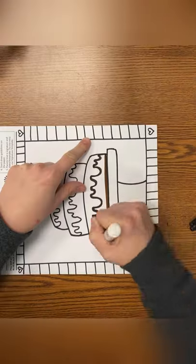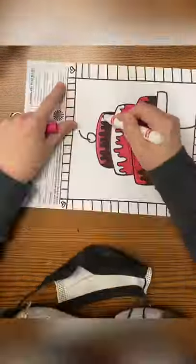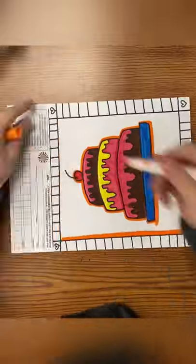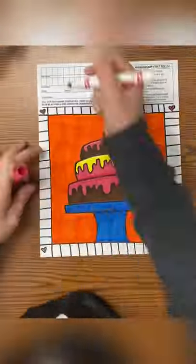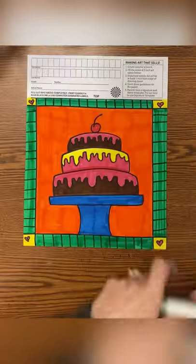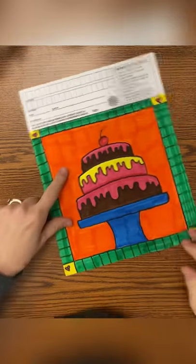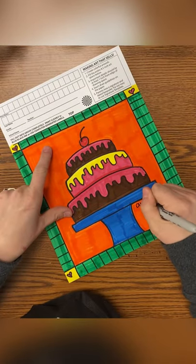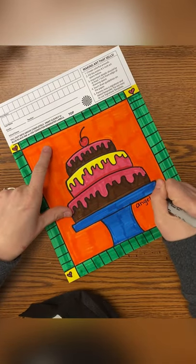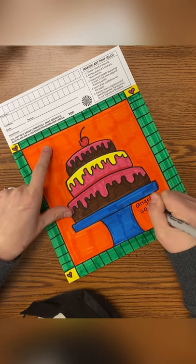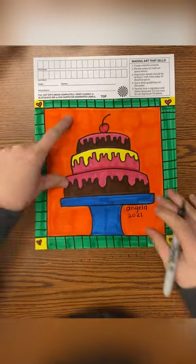I chose to color using chocolate and strawberry, but you can use any marker colors. Use a solid color for the background and a solid color for the frame. At this point, you want to make sure you've left no white space when you've colored, and you're going to add your name and the year.